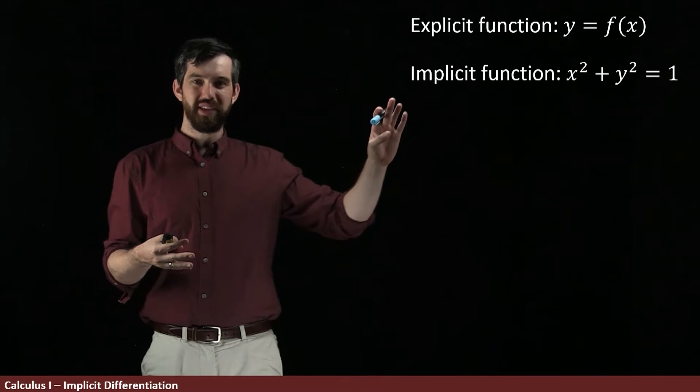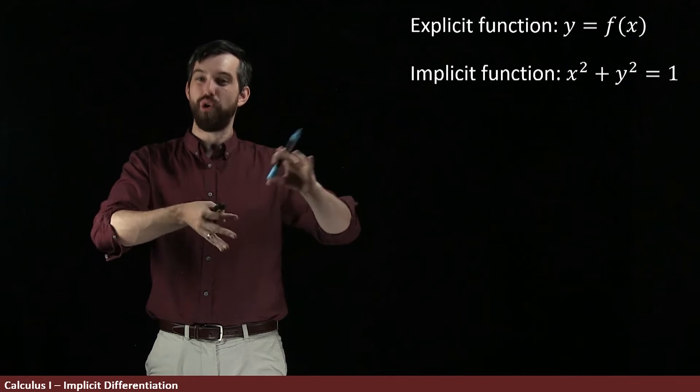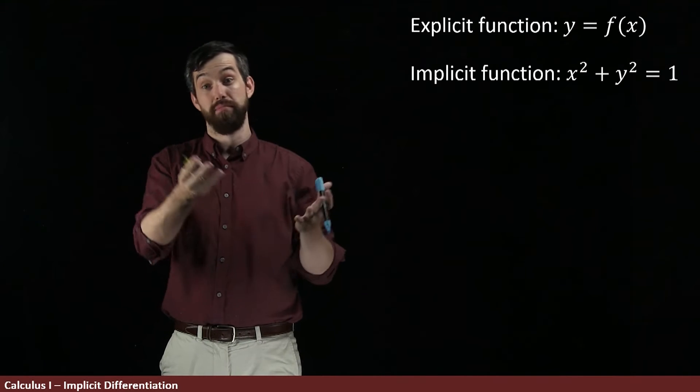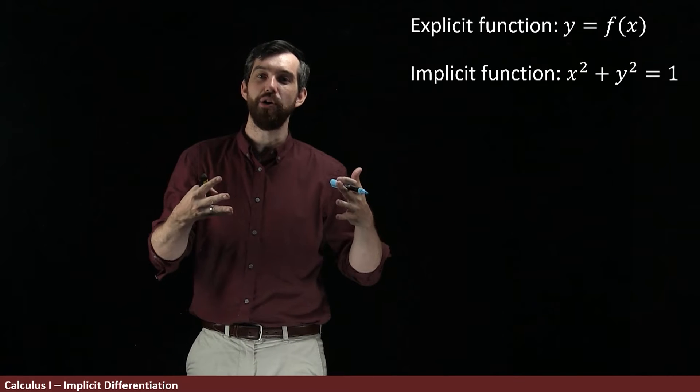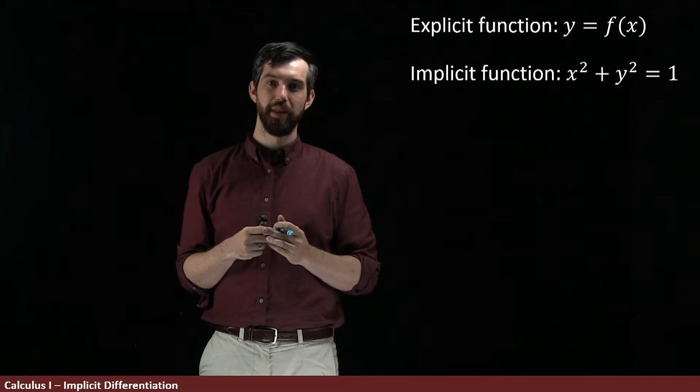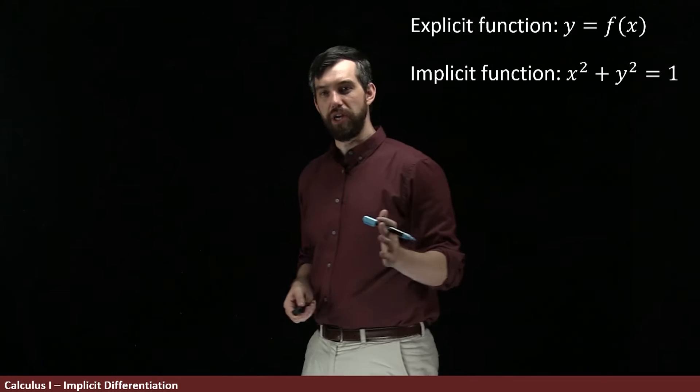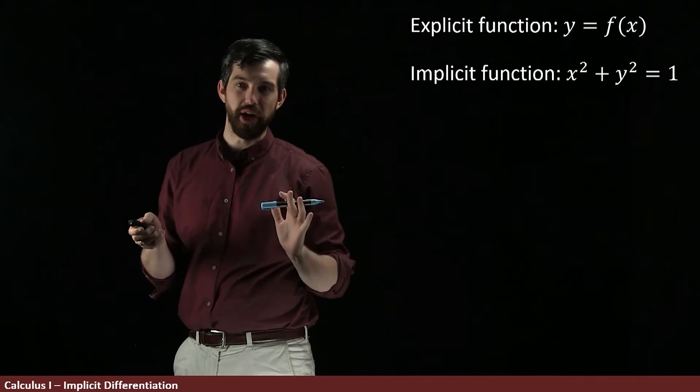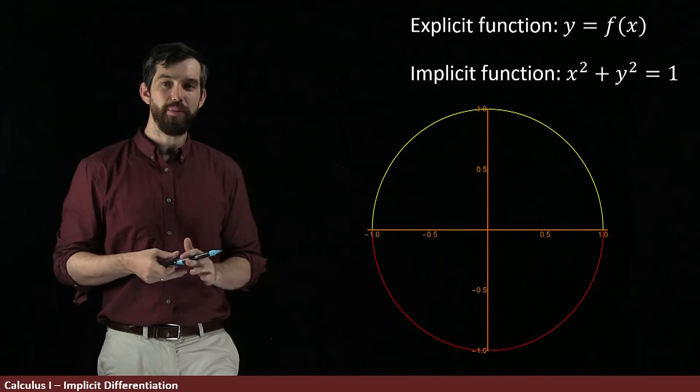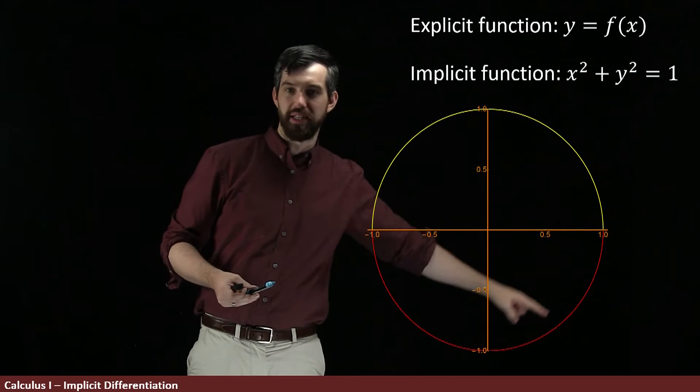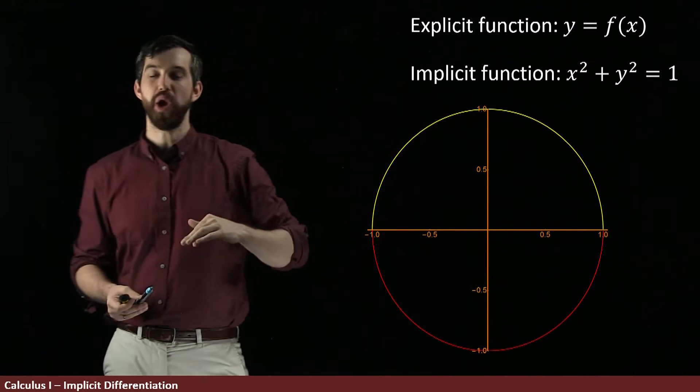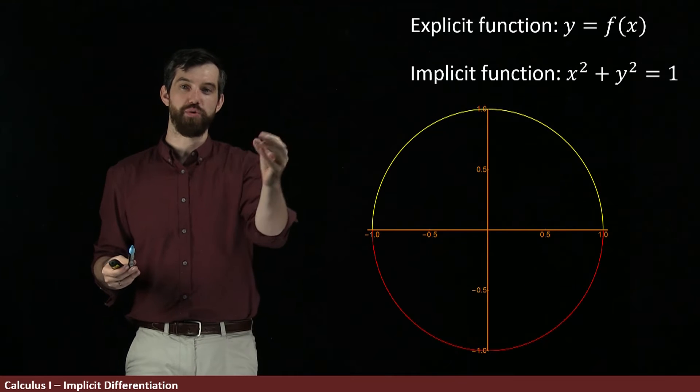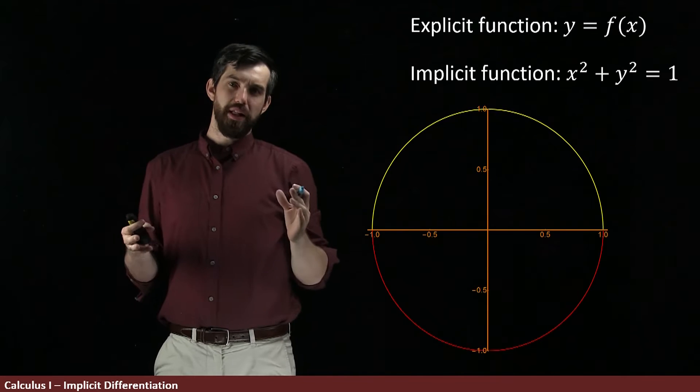So we want to try to see if given an implicit function, some just equation involving x and y, perhaps more variables if they were around, can we tease out explicit functions from them? For example, this equation is known to be the equation of a circle. So I can graph it. Indeed, this is a circle of radius 1 and all of the different points that are going to be on this have that x squared plus y squared is equal to 1.